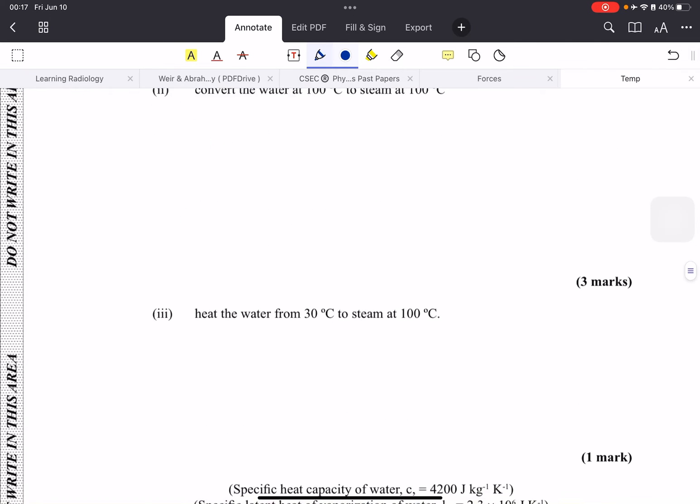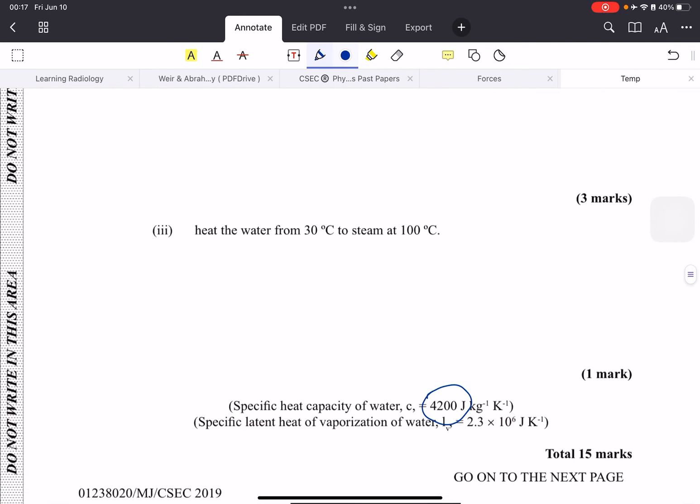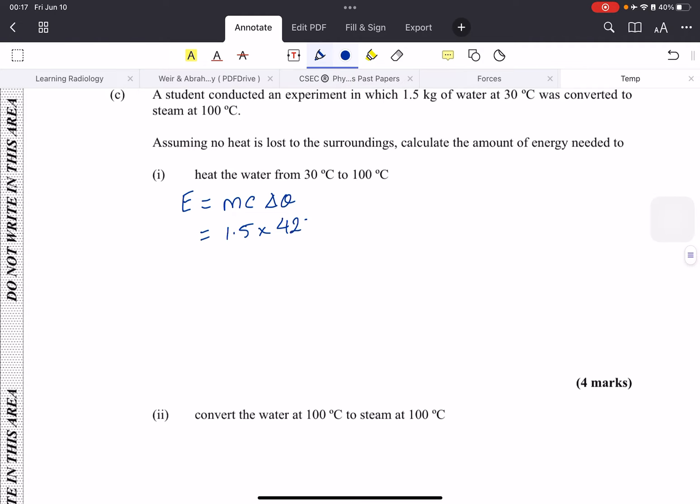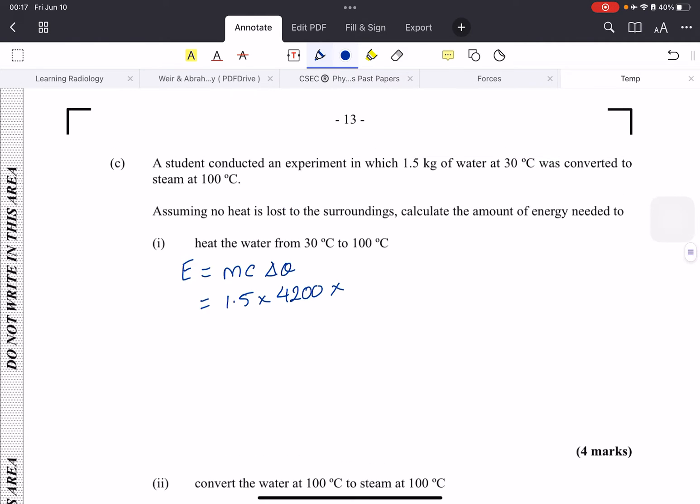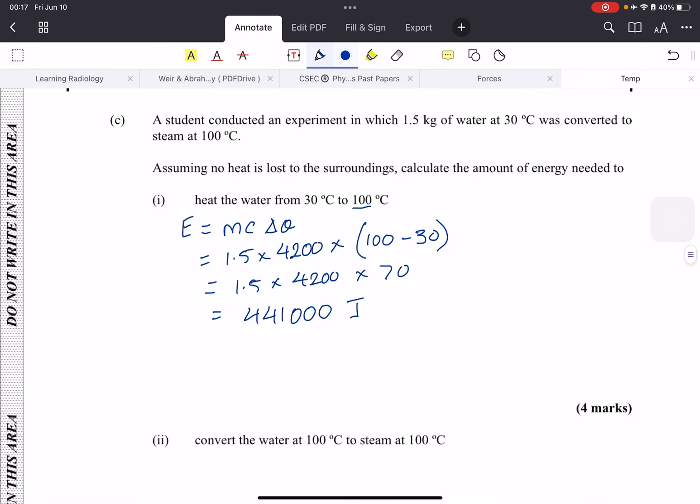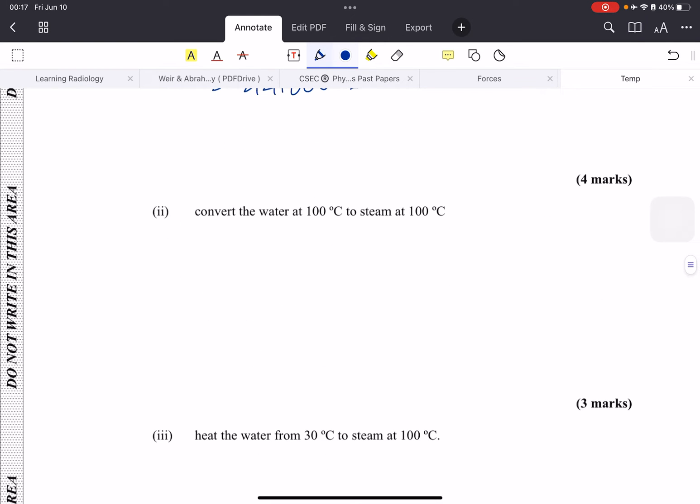c is the specific heat capacity, which they will give you: 4200. And your change in temperature is the final temperature, which is 100 degrees, minus your initial temperature, which is 30. So it's 1.5 by 4200 by 70. That will give us 441,000 joules.